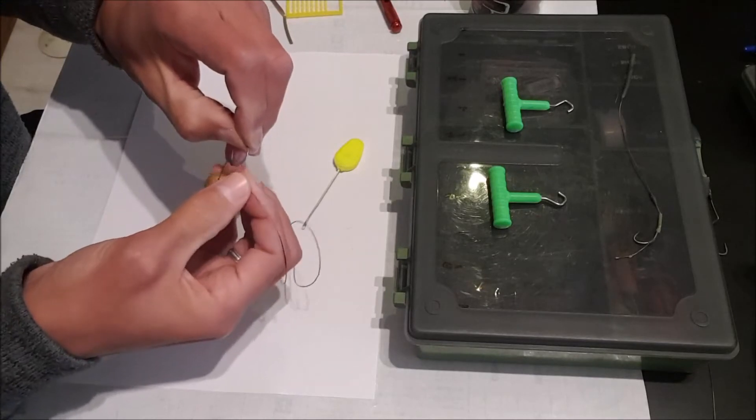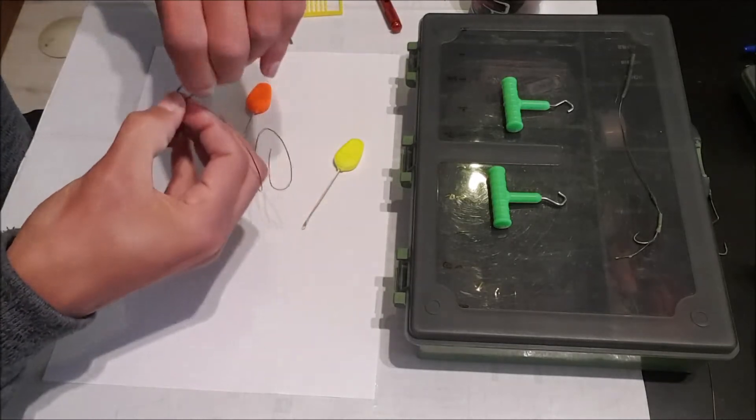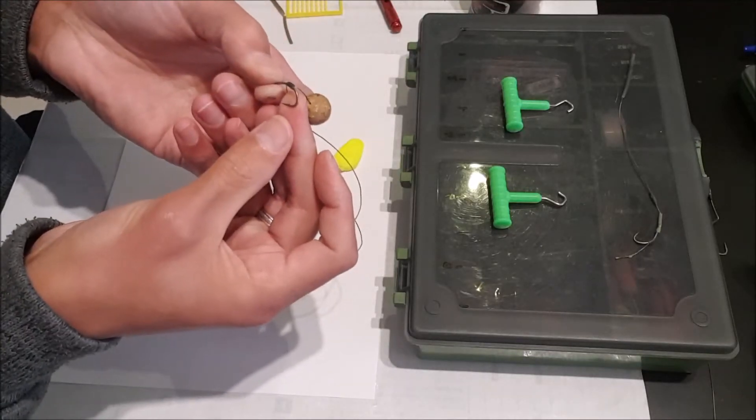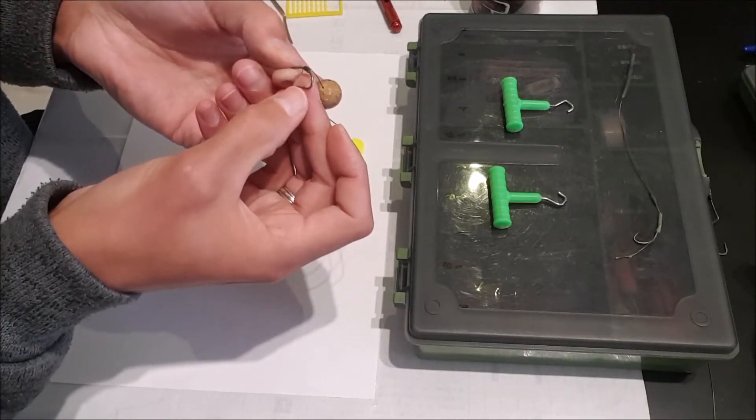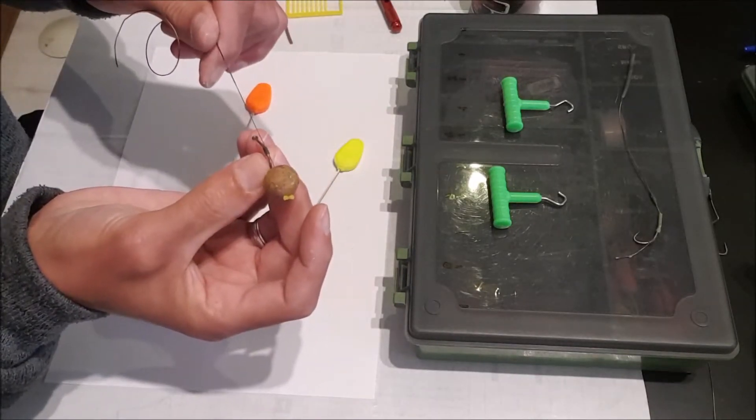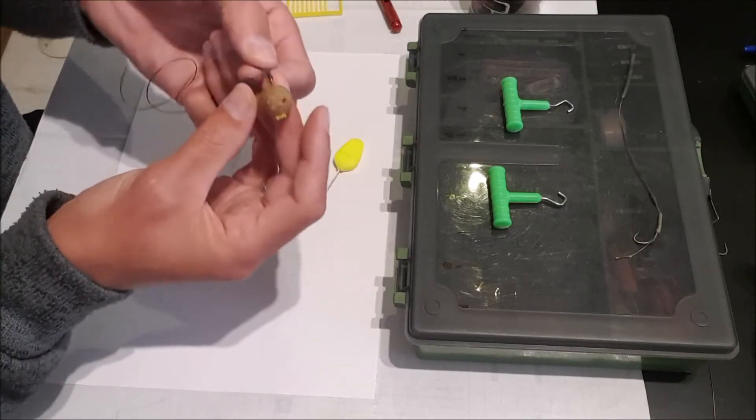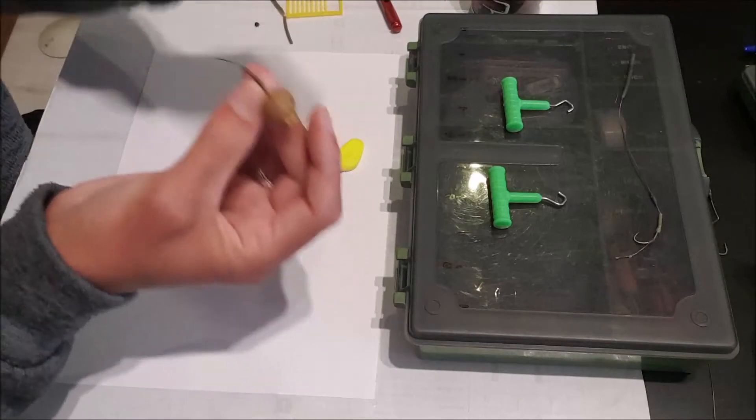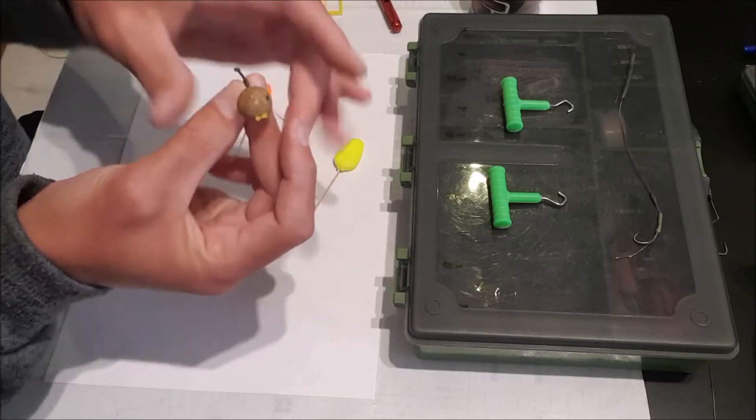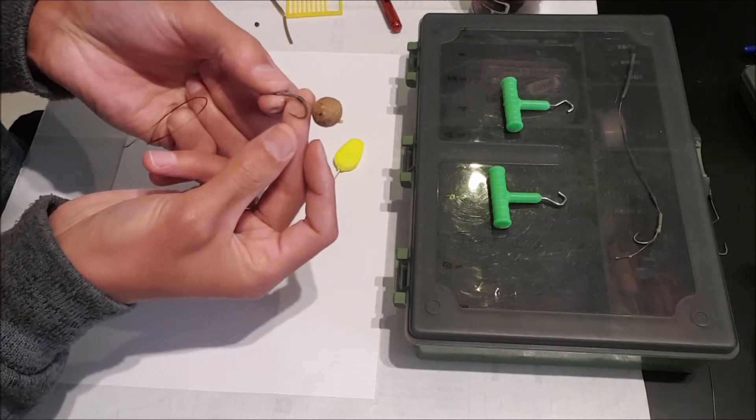Just check that you haven't snagged your hook link material, it moves freely. And then you want your tubing around in line with the barb. And then take the tag end, put it through the eye of the hook like so.